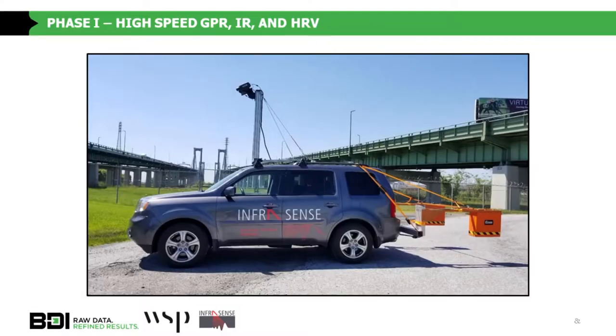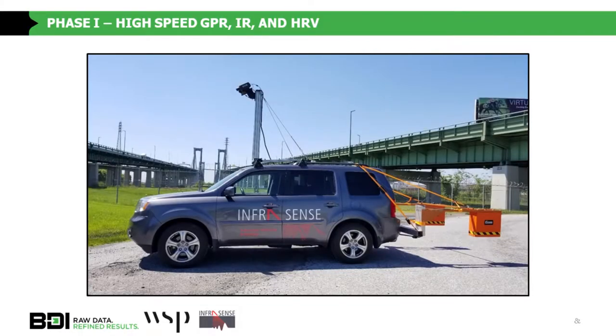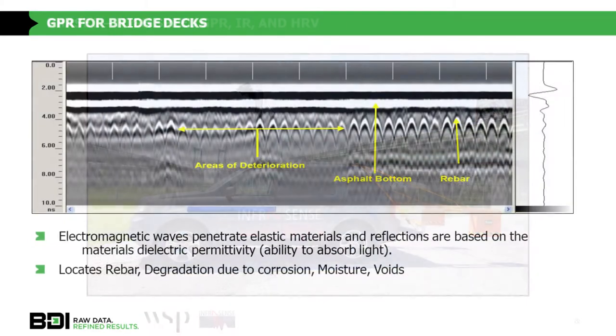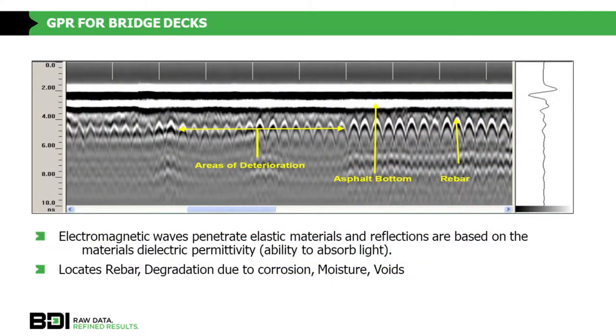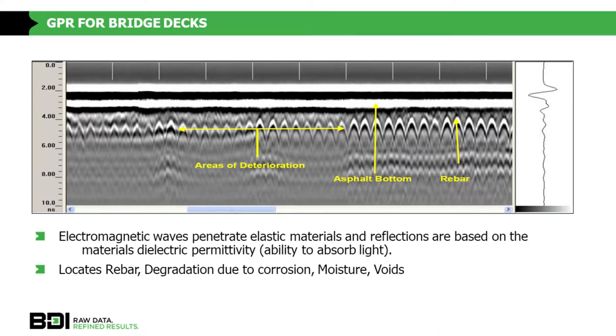For the first phase, we use air-coupled GPR — GSSI air-coupled antennas — driving at posted speed limit across the bridge deck to determine if we have any precursors for degradation, while simultaneously collecting infrared and high-resolution video. GPR sends electromagnetic waves into the bridge deck and is very good at identifying areas of good rebar, the cover of the rebar itself, and areas of potential degradation. Areas of signal attenuation indicate precursors such as chlorides, moisture, or cross-section loss. We can also identify rebar cover with high statistical precision, which we need for corrosion modeling.